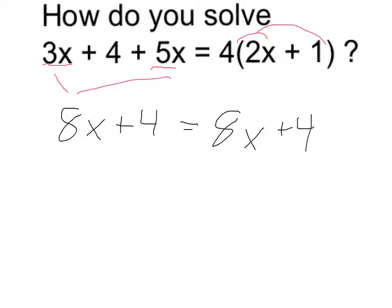Remember the question we're trying to ask is, for what x is it true? And it turns out it's going to be for every single x. To take it one step further, imagine if we subtract 8x on both sides, then we simply get 4 equals 4.